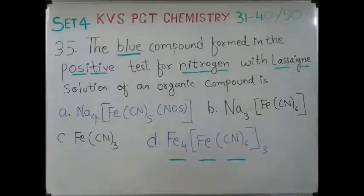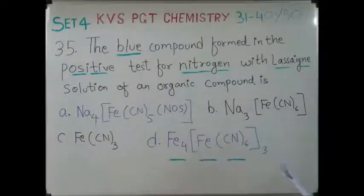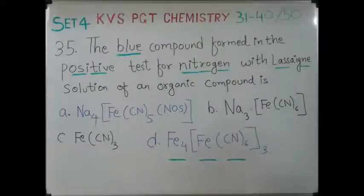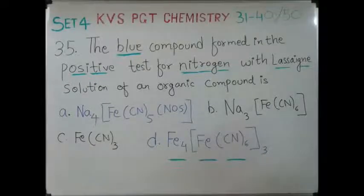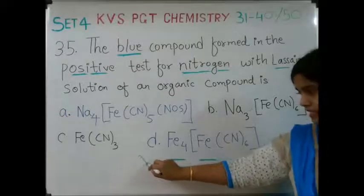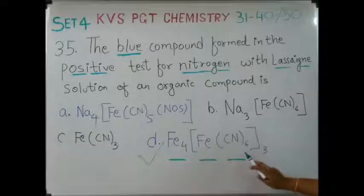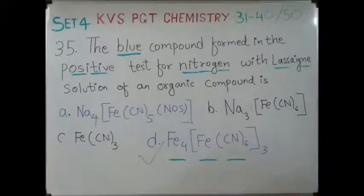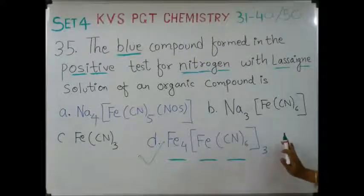The next question: the blue compound formed in the positive test for nitrogen with the Lassaigne's solution of an organic compound — you have to identify this complex. When you prepare the Lassaigne's extract and there is confirmation of nitrogen, what is the complex that gives the blue color? The correct answer is D: Fe₄[Fe(CN)₆]₃.